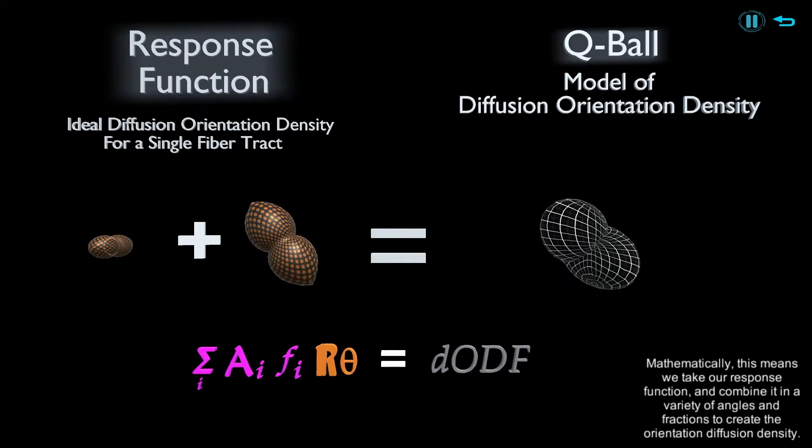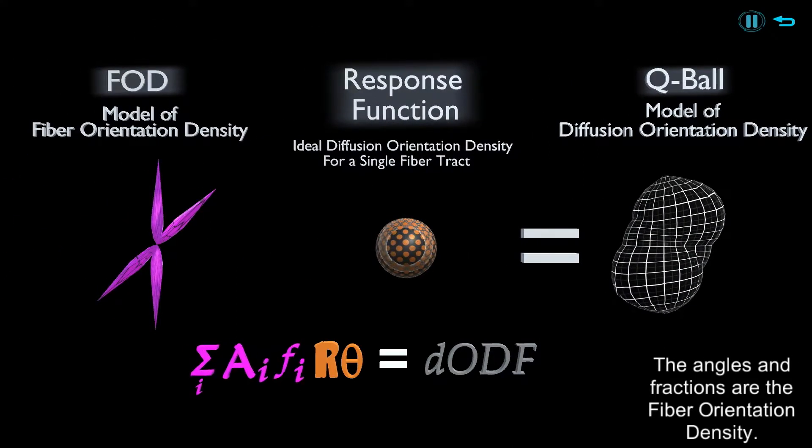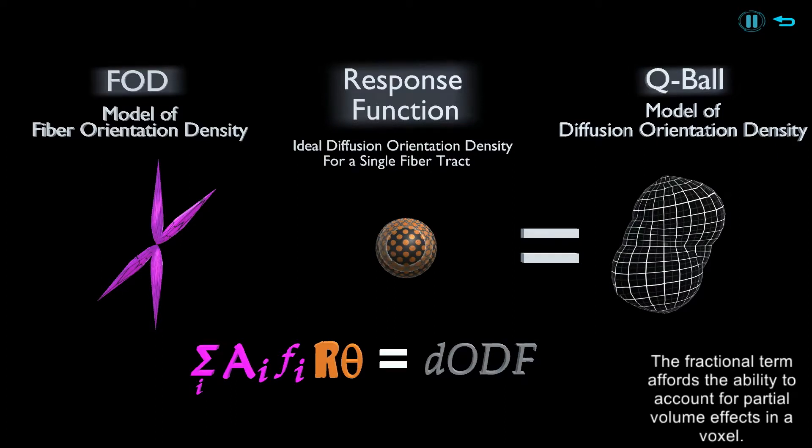this means we take our response function and combine it in a variety of angles and fractions to create the orientation diffusion density. The angles and fractions are the fiber orientation density. The fractional term affords the ability to account for partial volume effects in a voxel.